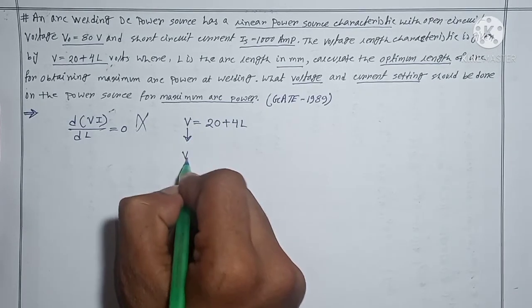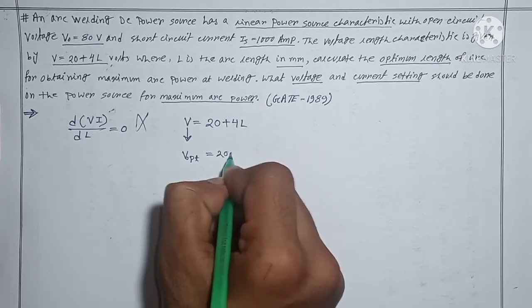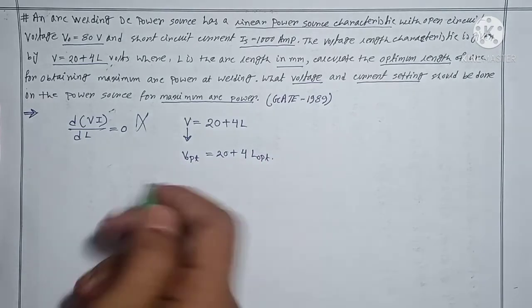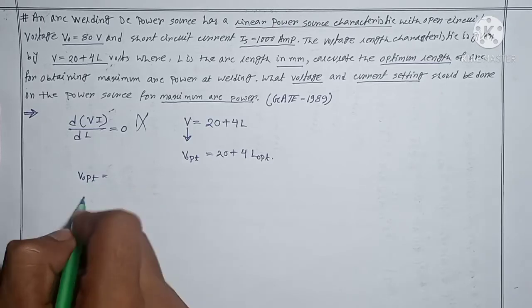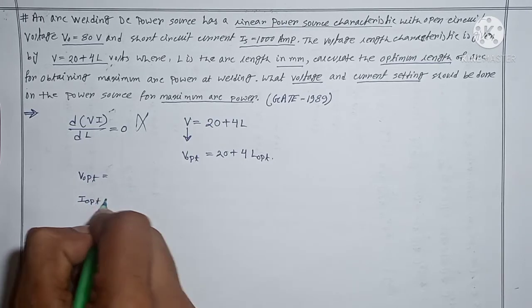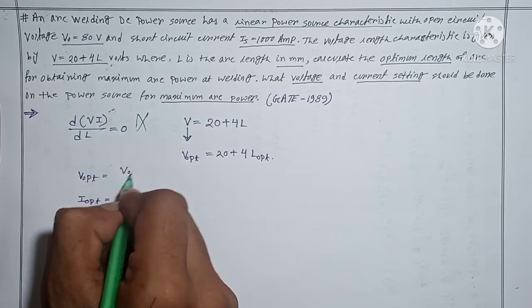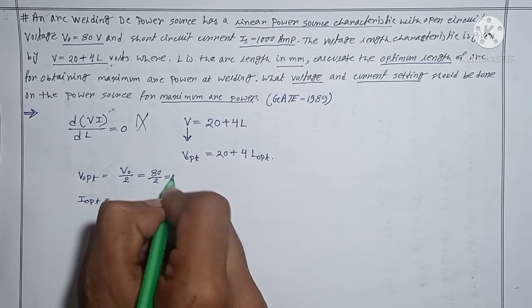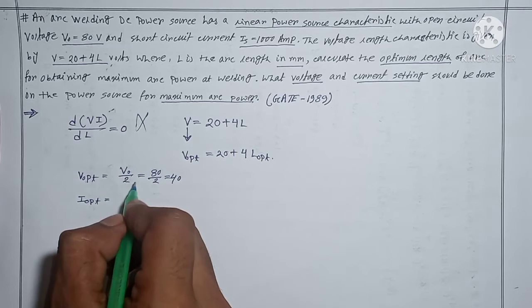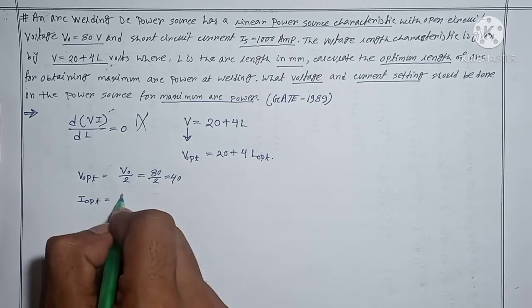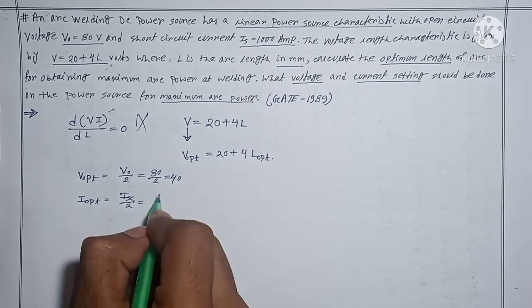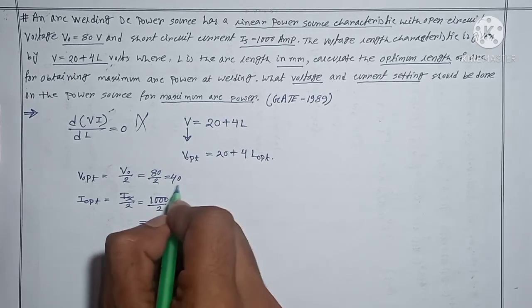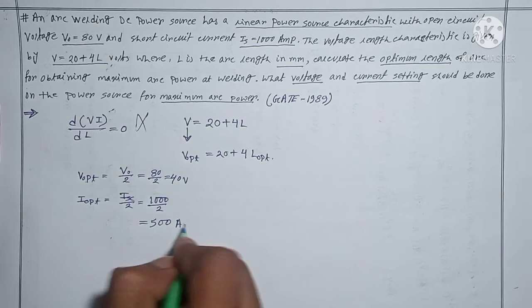If we replace this voltage as the optimum voltage, then this arc length can be replaced as the optimum arc length. We know how to find optimum voltage and optimum current: optimum voltage is simply half of the open circuit voltage, which is 80/2 = 40 volts. Optimum current is simply short circuit current divided by 2, which is 1000/2 = 500 amperes.